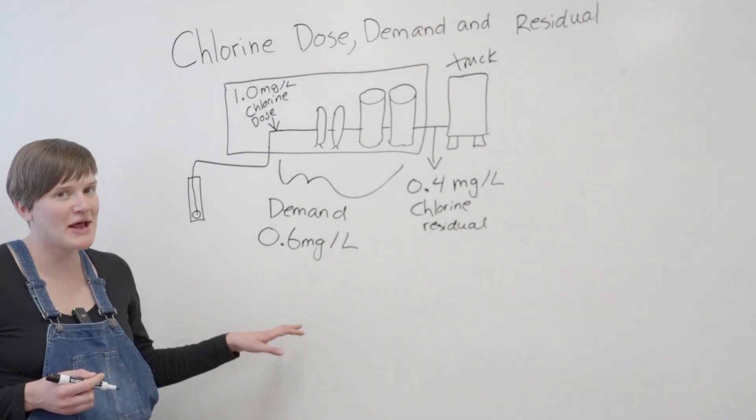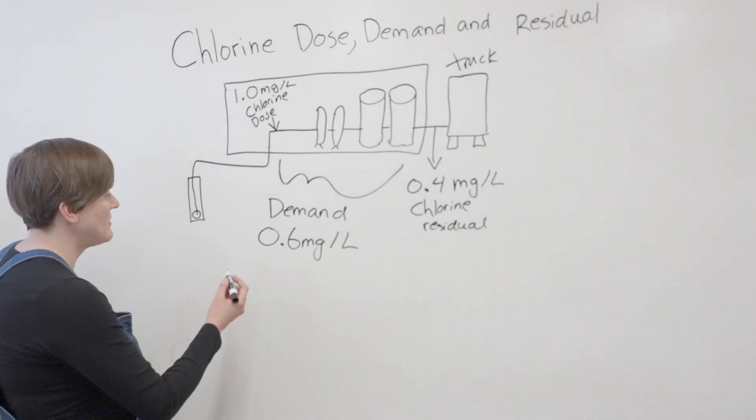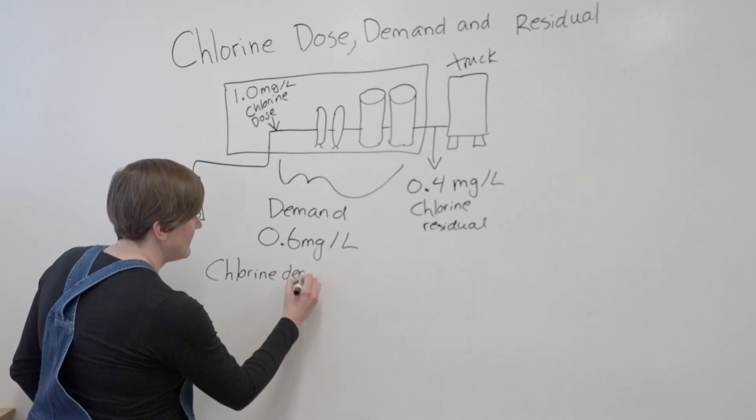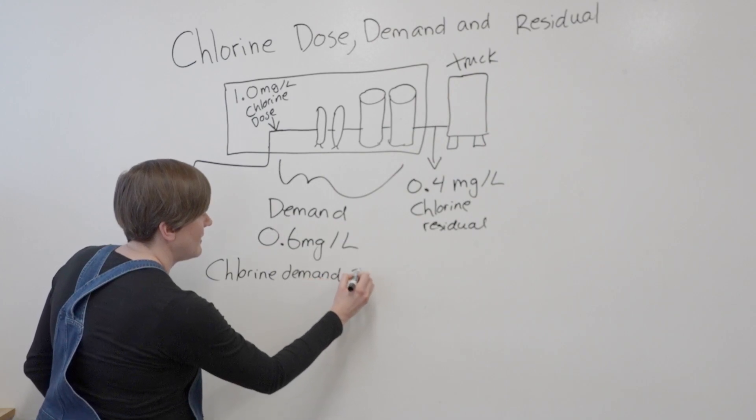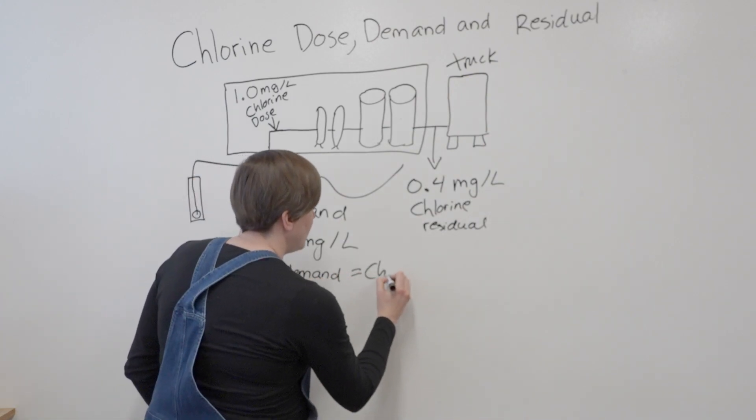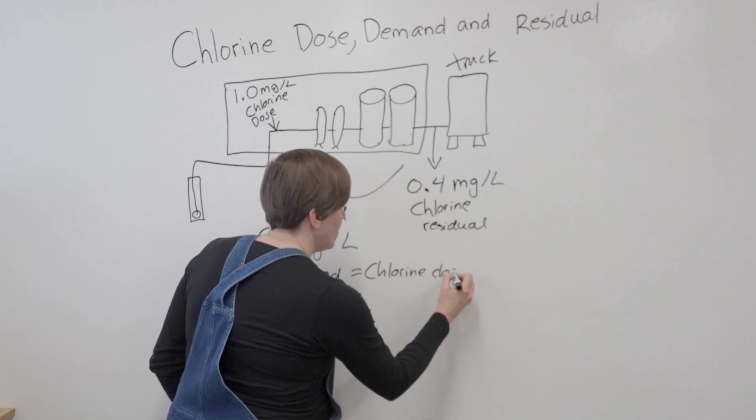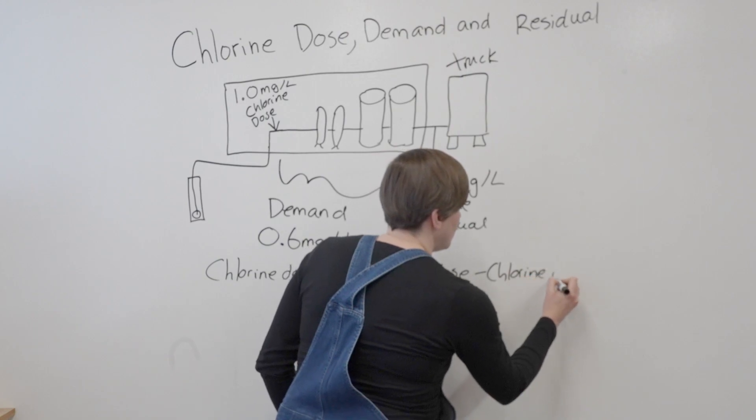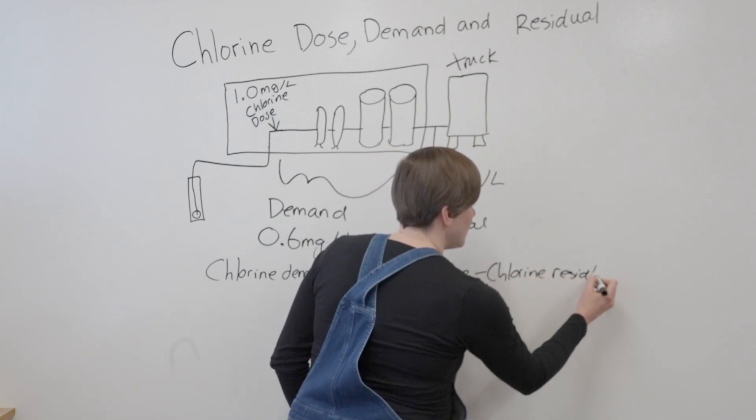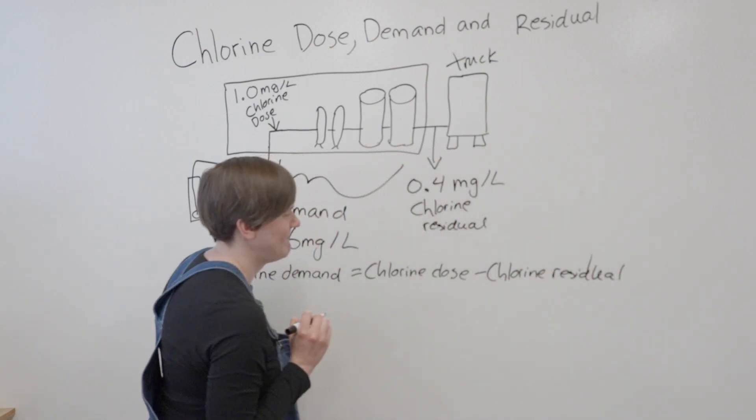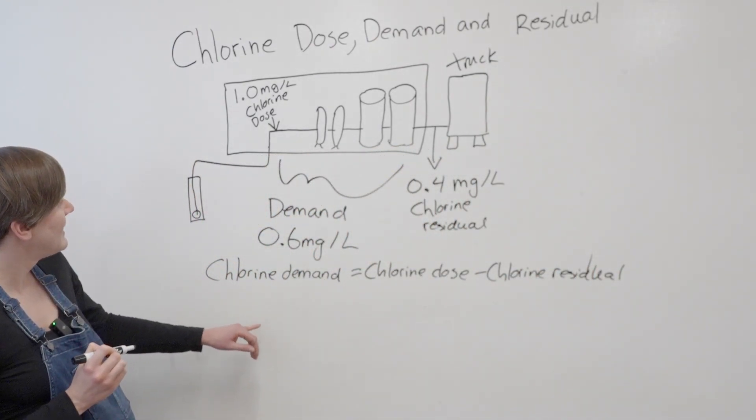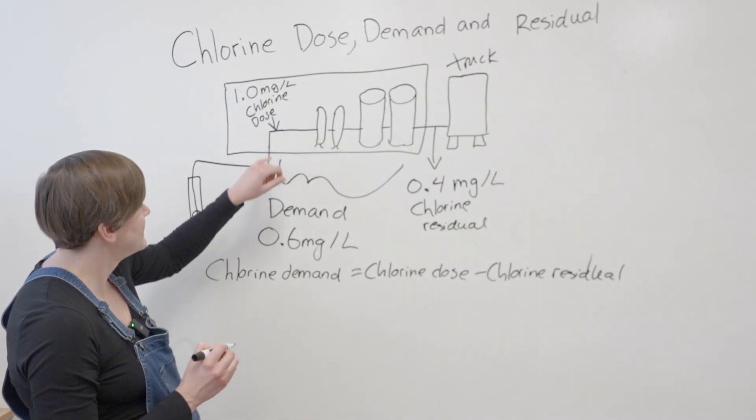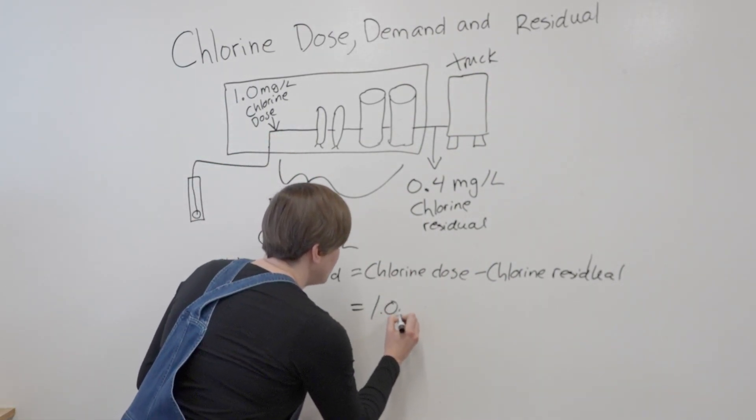If I wanted to write out what I just did in a mathematical formula, it would be: chlorine demand equals chlorine dose minus chlorine residual. So chlorine demand is what I was solving for - I figured out that it was 0.6. Chlorine dose was given, so it was 1.0 milligrams per liter.